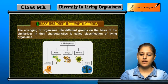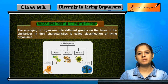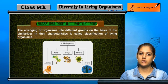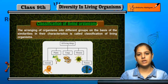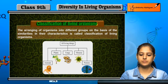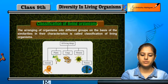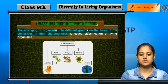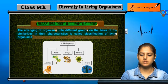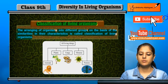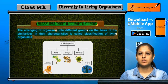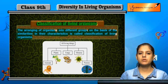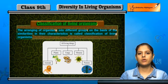Our next topic is Classification of Living Organisms. We have seen why there is a need to classify organisms and the reason and importance of classification. Classification is the arranging of organisms into different groups on the basis of similarities in their characteristics. It means we look for similar characteristics, put organisms in groups, and study them as a group.